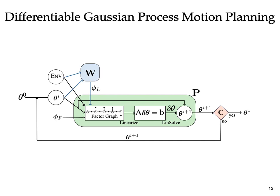We now introduce another module W with trainable parameters that outputs at every iteration phi l, the set of parameters that we wish to learn. In our case, these correspond to the covariances for GP and obstacle factors used by P to construct the factor graph.